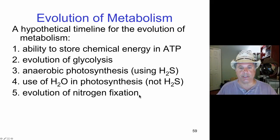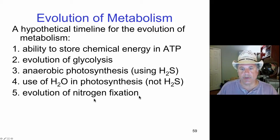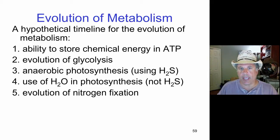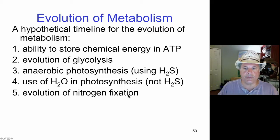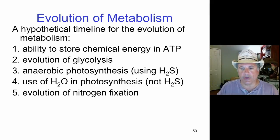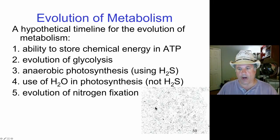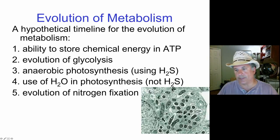The evolution of nitrogen fixation was also a huge advance. Proteins have nitrogen in them, as do nucleic acids in their nitrogenous bases. But photosynthesis can't produce those compounds because they contain nitrogen, and photosynthesis only produces carbohydrates. So the ability to fix nitrogen — to take nitrogen gas from the atmosphere and utilize it to build molecules — was enormous. Here is an example of present-day nitrogen-fixing organisms: a root nodule of a plant containing rhizobium bacteria.